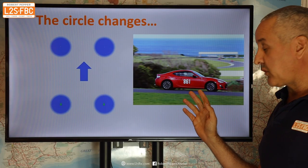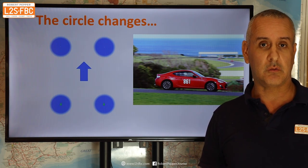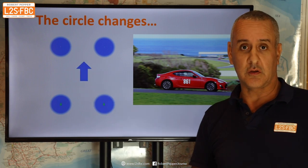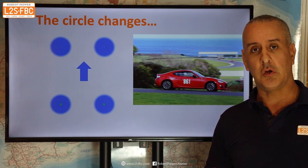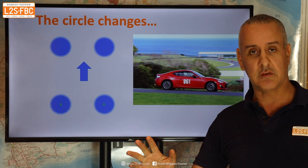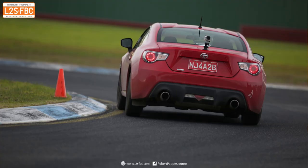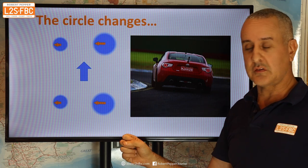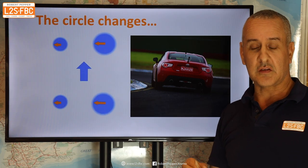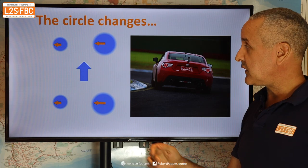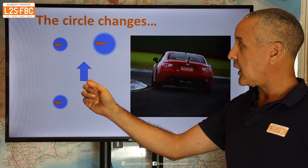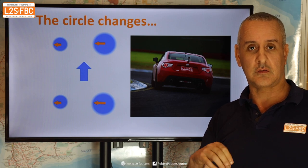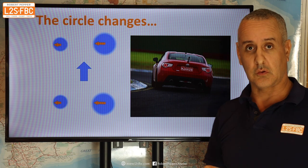A car at speed on a racetrack accelerating slowly with roughly 50-50 front-rear weight distribution will have roughly equal traction circles at each wheel. Going around a left-hand bend, there's a massive weight shift to the right — the outside — so the two right-side traction circles increase in size while the two left-side circles massively reduce. Physics dictates that the increase in grip on the outside is less than the decrease on the inside, giving an overall net decrease in grip mid-corner compared to a straight line.